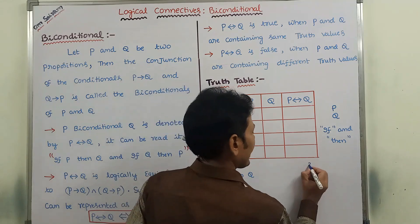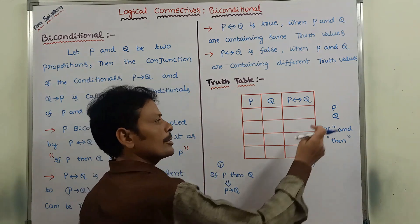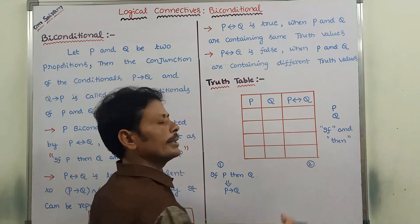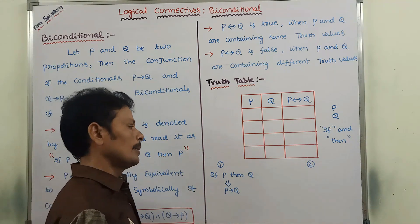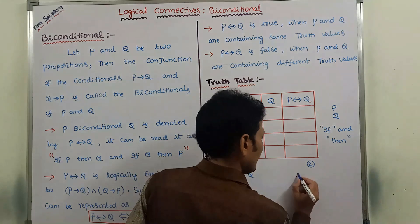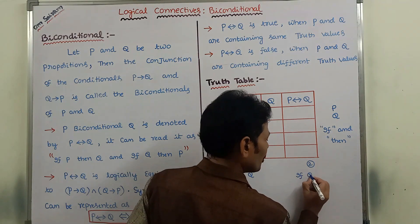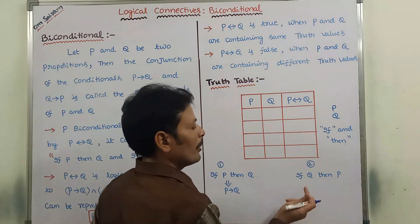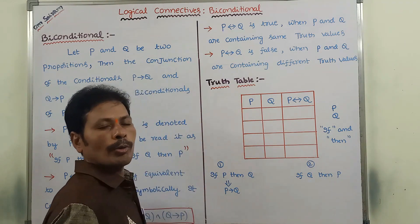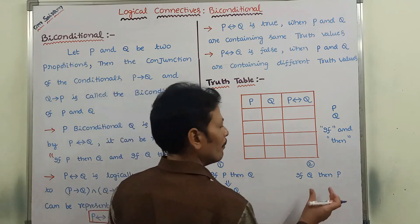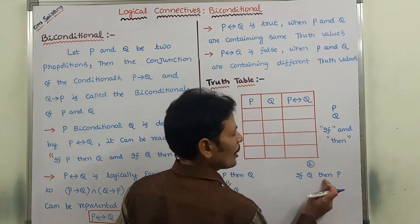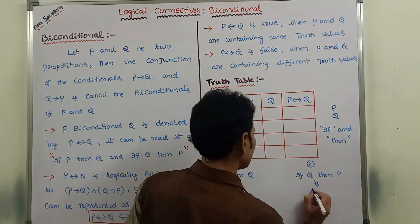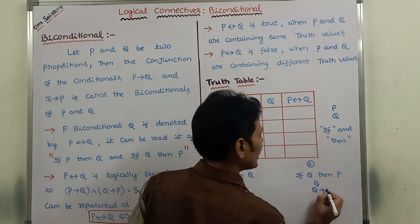The second way is to combine these two propositions using 'if' and 'then' in reverse: if Q then P. Before proposition Q we write 'if,' and between the propositions we write 'then.' Symbolically, this is represented as Q conditional P.